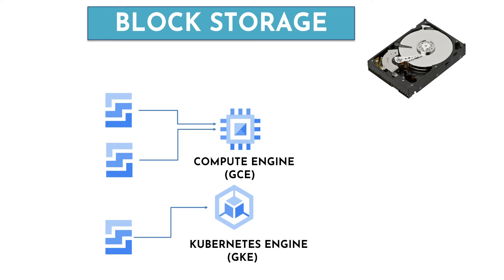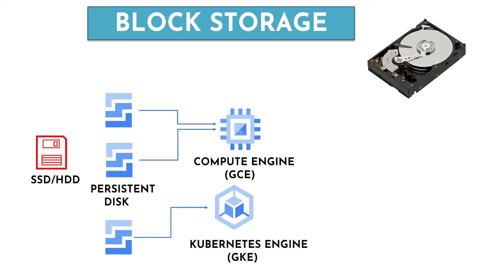We have the concept of persistent disk because block storage can be persistent or non-persistent in nature. A persistent disk is a high-performance block storage that uses a solid state drive (SSD) or a hard disk drive (HDD). You can attach multiple persistent disks to Compute Engine or GKE simultaneously. Data stored in the persistent disk can be retrieved even after the instance is stopped, rebooted, or if it crashes — the data will still be there.